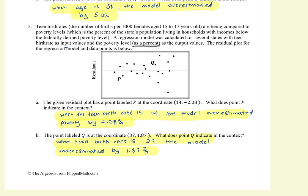Number 5, again started with P, this time P is under so the model overestimated it for the teen birth rate at 14, it overestimated it by 2.08 and this time it said percent so make sure you pay attention to your units and all that stuff. B point Q, or yeah, point label Q was above it so the model underestimated which means at the birth rate of 37 the model underestimated by 1.87%. So is this under the line and overestimated? Correct, wherever the line is so the line is over then the line overestimated. If the line is under then the line underestimated.